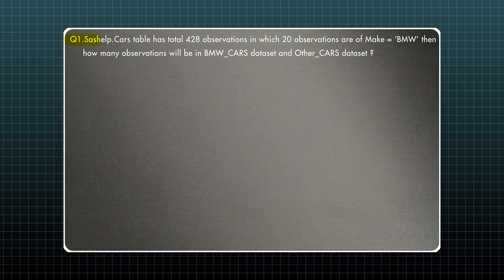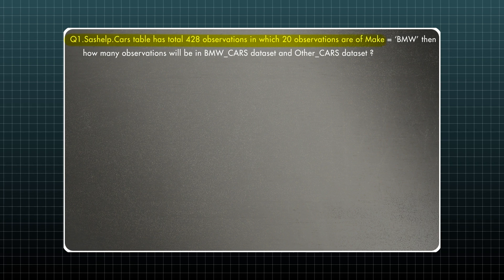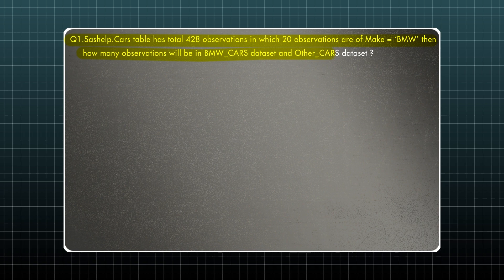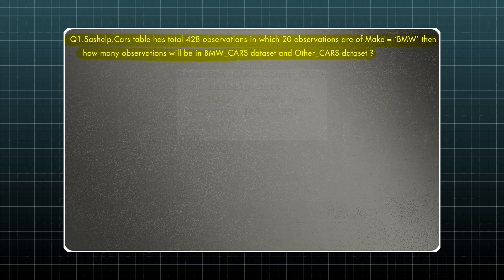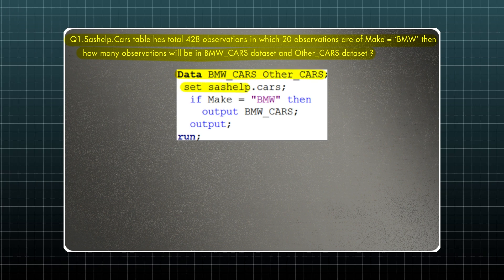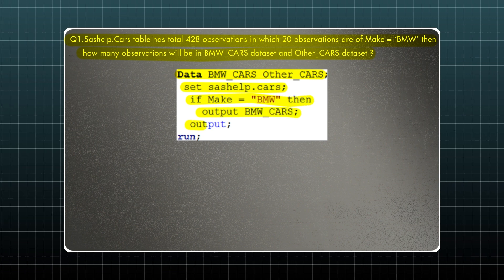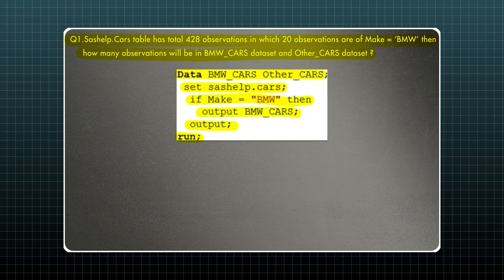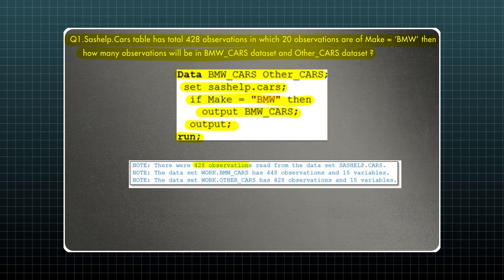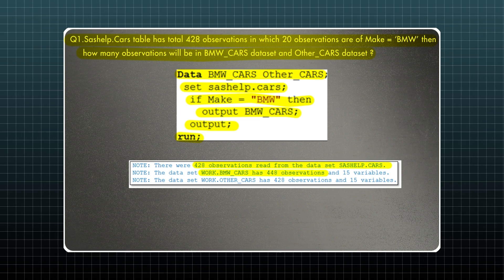The syshelp.cars table has a total of 428 observations, in which 20 observations are of make equal to BMW. The question is: how many observations will be in the bmw_cars dataset and the other_cars dataset? The code is: data bmw_cars other_cars; set syshelp.cars; if make equal BMW then output bmw_cars; output; run. What will happen if I run this code? The answer is: 428 observations are read from syshelp.cars, and bmw_cars has 448 observations.